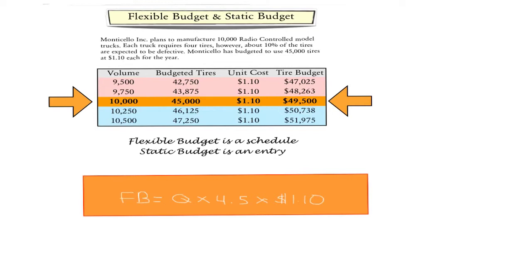However, there is no guarantee that the company will actually manufacture 10,000 trucks, and if it manufactures a different number, when it compares the outcome with the budget, it may want to adjust the budget for the actual level of trucks produced. To do this, we use a flexible budget — a complete schedule of relationships between the quantity of trucks produced and the cost for tires.